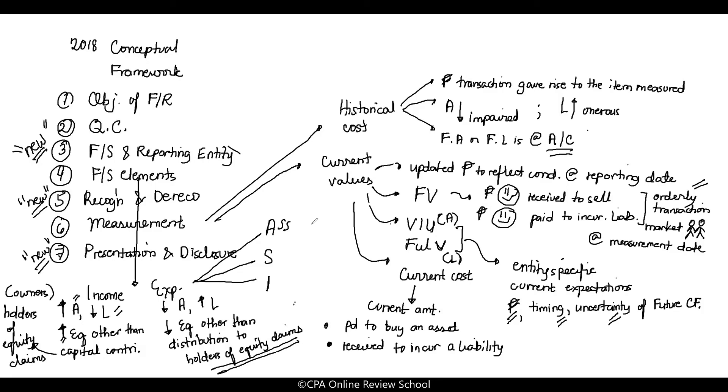There are three types of recognition for expenses. This hasn't changed. Just remember the basketball player Asi Taulaba. What are the three bases for measuring or recognizing expenses? Letter A, associating cause and effect.